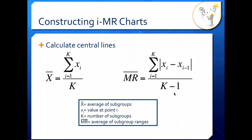IMR charts are constructed in very similar ways to X-bar and R charts. First thing you want to do after you get your data collected is calculate your central lines. Here your central line is just X-bar. Remember, you're only collecting single points per measurement. So you don't have an average of averages. You just have an average of all of your points.